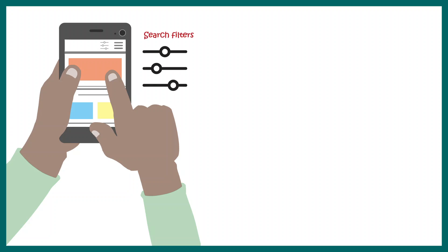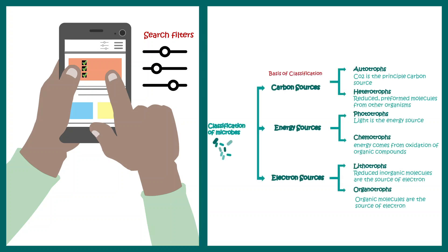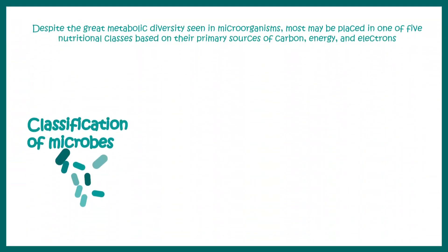These are like filters that we apply for a Google search. We can have one filter at a time or multiple filters at a time. So far what we have looked at is basically one filter at a time. Now there could be more complicated classification schemes where we use many of these filters together to get a better-defined category of bacteria.